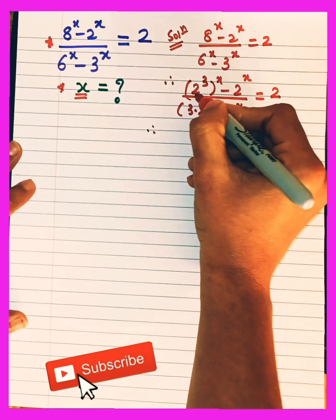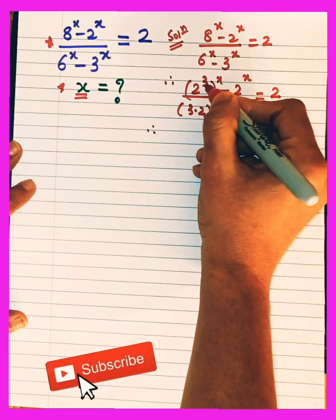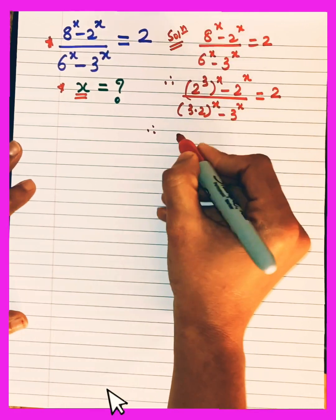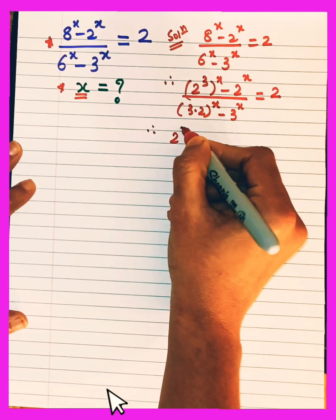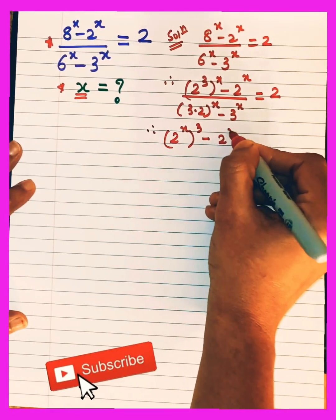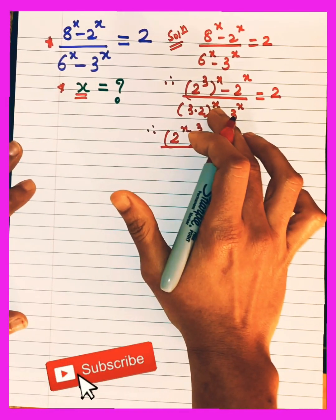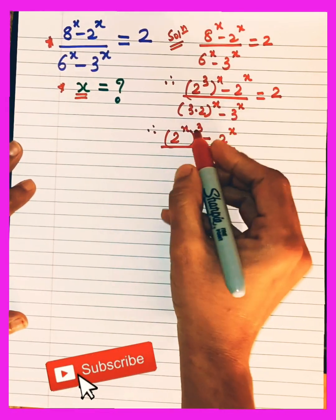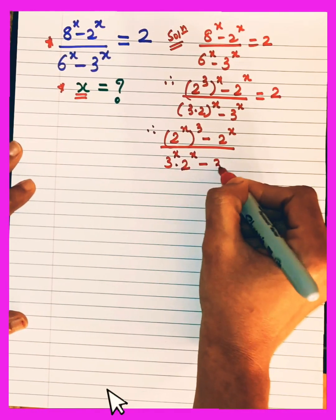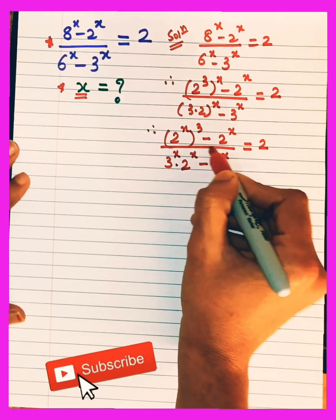Now, 2^(3x) can be rewritten as (2^x)³. So I am just changing the placement of the powers: I'll write (2^x)³ minus 2^x in the numerator. In the denominator, I open the bracket so the power distributes: 3^x × 2^x minus 3^x, equals 2.